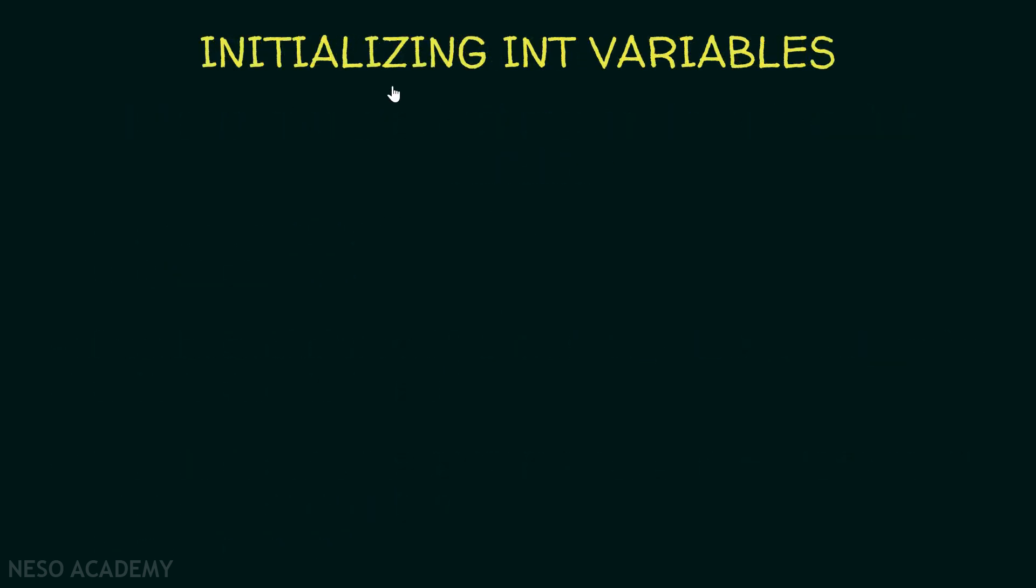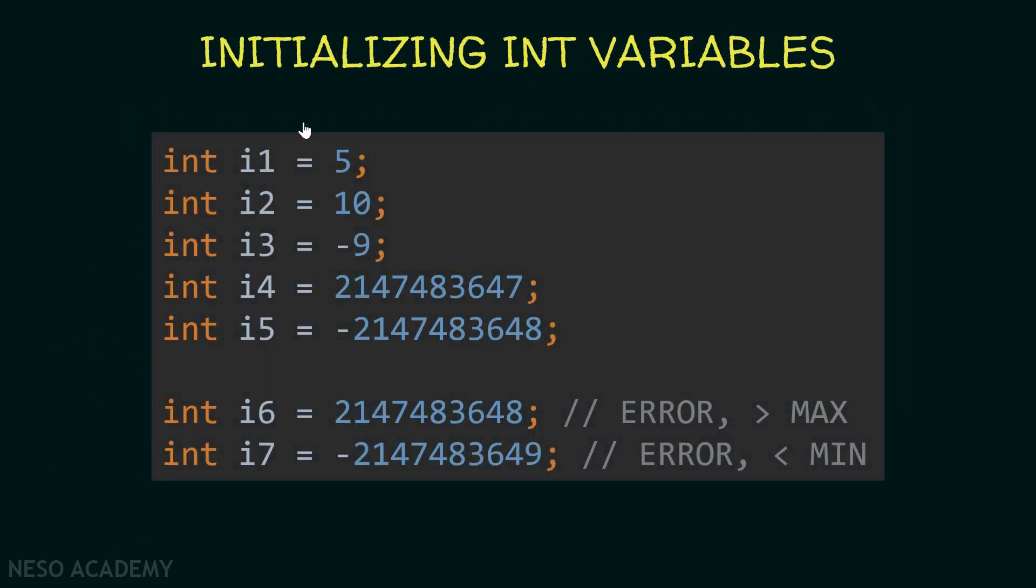So now let's initialize some int variables. Have a look at this code over here. I'm initializing a variable called i1. Its type is an integer and it is equal to 5. So the number 5 will be stored inside i1. And also we are initializing i2, i3, i4, and i5. And we can use them just like another variable.